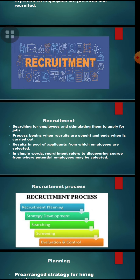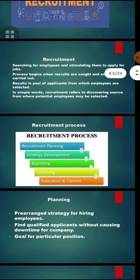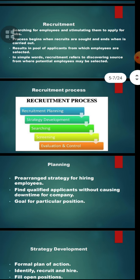There are five processes in recruitment. Let us discuss them one by one. The first one is recruitment planning, the second is strategy development, the third is searching, the fourth is screening, and the fifth is evaluation and control. The first one is planning — a pre-arranged strategy for hiring employees, finding qualified applicants without causing downtime for the company, and calling for a particular position.